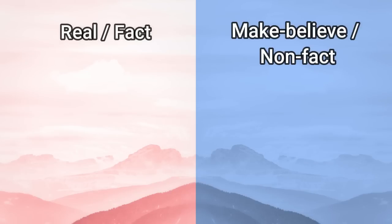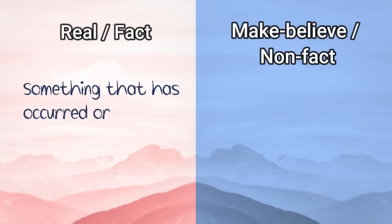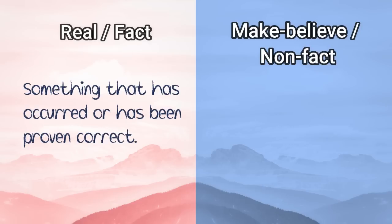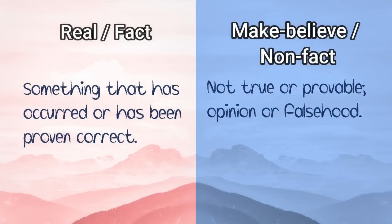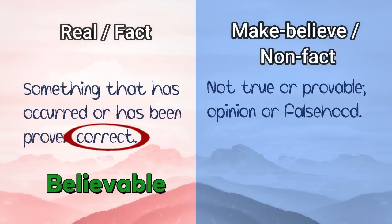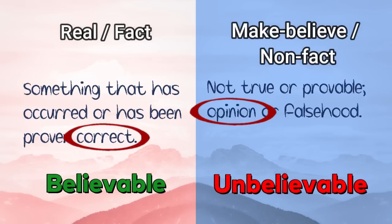Let's differentiate real and make-believe. When we say real or fact, it is something that has occurred or has been proven correct. While make-believe or non-fact means not true or provable — opinion or falsehood. In real, we have the word correct, meaning believable. In make-believe, we have the word opinion, meaning unbelievable.